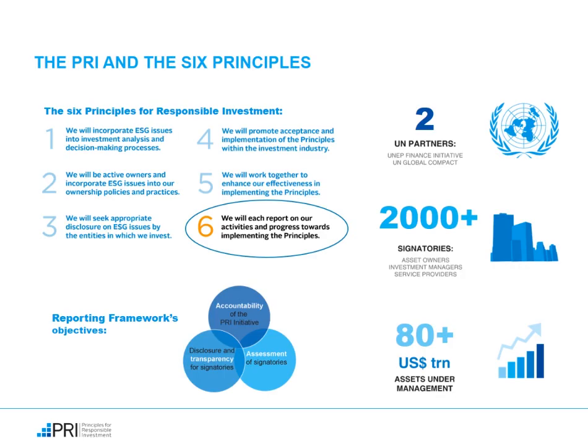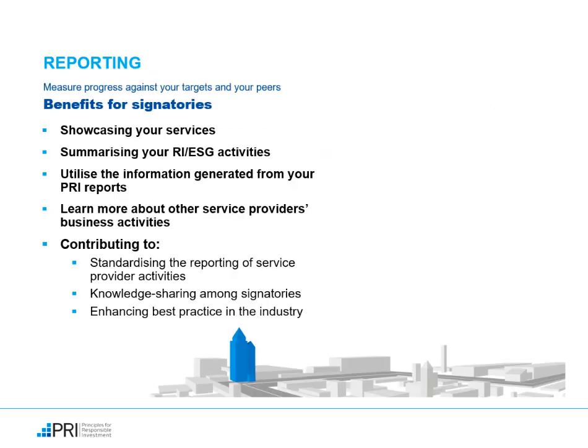When you sign up to the Principles for Responsible Investment, you are committing to six principles. Reporting to the PRI on your activities and progress towards implementing the principles fulfills Principle 6. The Service Provider Reporting Framework was introduced in 2017 and made mandatory in 2018 after an extensive signatory consultation. While reporting is a requirement of the PRI, you as a signatory benefit from the process and outputs. By completing the PRI reporting, you play a key role in standardizing the reporting for service provider activities, promoting knowledge sharing among signatories, and enhancing best practice in the industry.